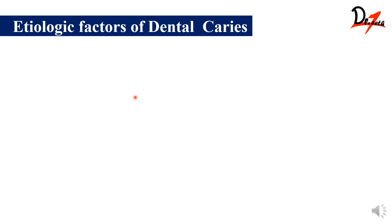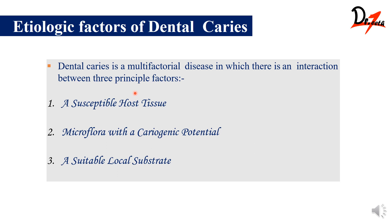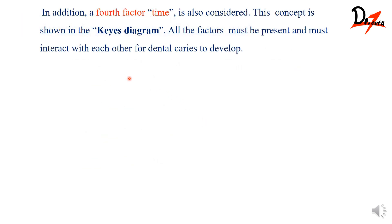Now let's see the etiological factors of dental caries. You have to remember that caries is never a single factor disease — it is a multifactorial disease, meaning more than one factor must interact for dental caries to form. For that, we need a susceptible host tissue, microflora with cariogenic potential, and a suitable local substrate like carbohydrates or sweet food. These three are the basic factors. Besides these, a fourth factor — time, that is the time of contact or exposure — is also very important.